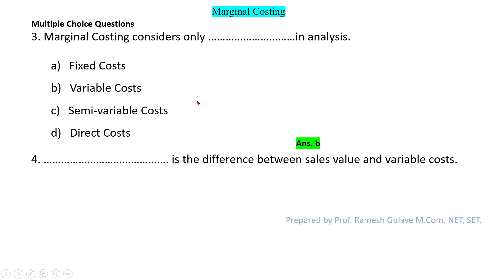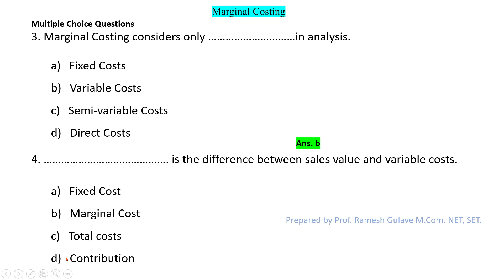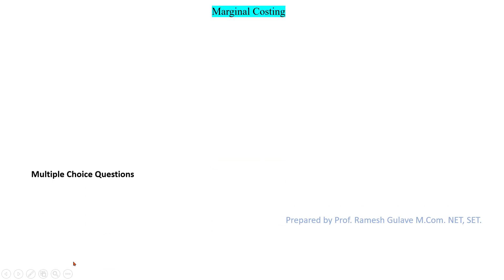The next question says: dash is the difference between sales value and variable cost. In the marginal costing equation, when we subtract variable cost from sales we get contribution. So option D — contribution — is the right answer. Sales minus variable cost gives us contribution, and contribution minus fixed cost gives us profit.